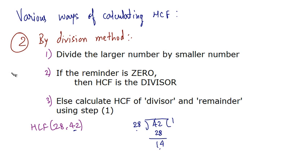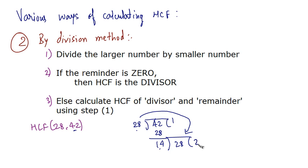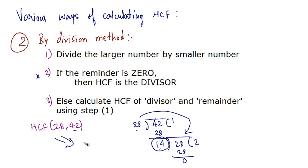Now back to step 1: divide the larger number by the smaller number. The smaller number is the remainder, so we divide 28 by 14. 14 times 2 is 28, and the remainder is now 0. We move to step 2: if the remainder is 0, then the HCF is the divisor. So this divisor, 14, is the highest common factor. Therefore, the HCF of 28 and 42 is 14.